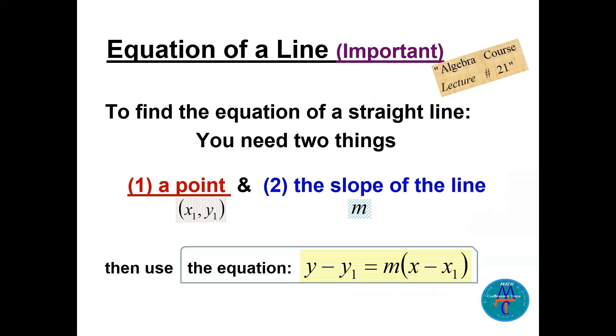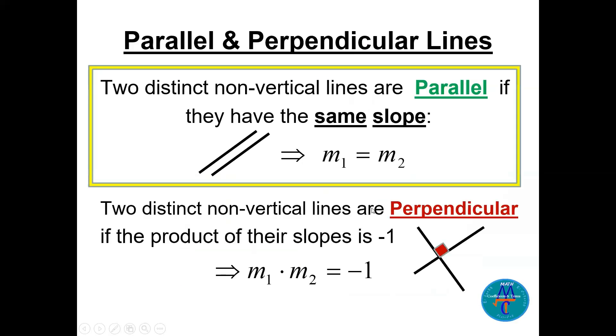Also we need to use the equation of the line so many times. This is in the algebra course lecture 21. To find the equation of the line we need to use this equation: y - y₁ = m(x - x₁), where (x₁, y₁) is a point on the line and m is the slope. Also we can use the parallel lines here with the same slope and perpendicular lines where the product of the slopes is minus one.